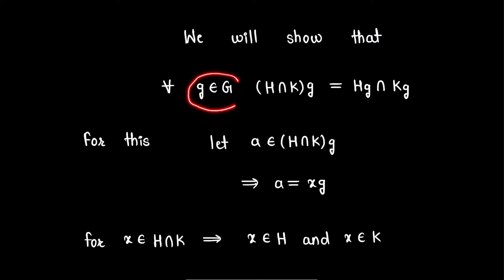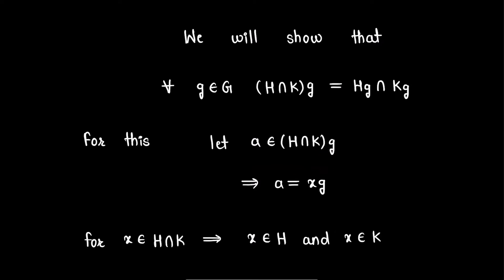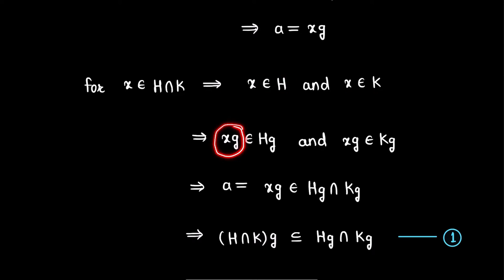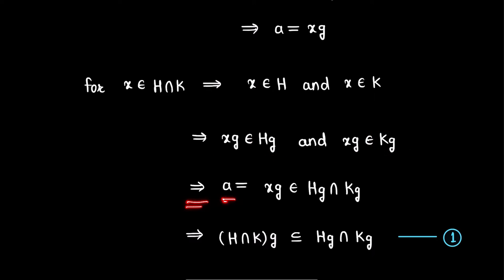Now we will show that for all elements g in group G, (H intersection K)g equals Hg intersection Kg. For this, let A be an element in (H intersection K)g. This implies A equals xg for some x belonging to H intersection K. As x is in H intersection K, x is in H and x is in K. For x in H, xg is an element of Hg, and for x in K, xg is an element of Kg. Thus A, that is xg, is a member of Hg intersection Kg. Therefore (H intersection K)g is a subset of Hg intersection Kg. Call this expression 1.